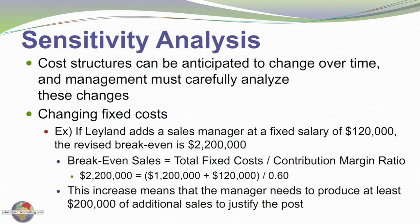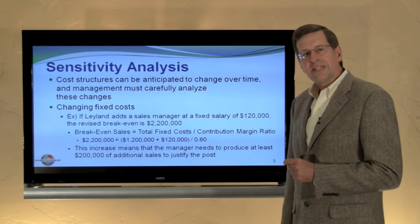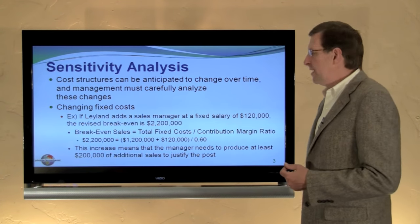In revising this example, we're going to assume we hire a sales manager at an annual fixed cost of a hundred and twenty thousand dollars, and that would increase our fixed cost pool to one million three hundred and twenty thousand. If we divide that by our 0.6 contribution margin ratio we come up with our revised break-even sales of two million two hundred thousand dollars. This is the same break-even calculation we did previously but we've added additional fixed cost, meaning we'll need a two hundred thousand dollar increase in sales to at least cover that fixed cost.